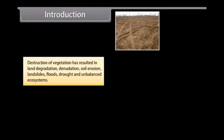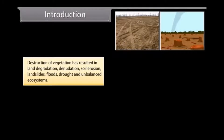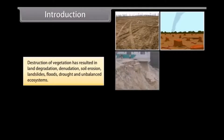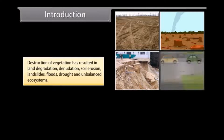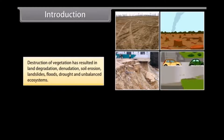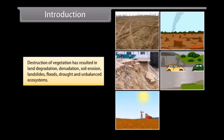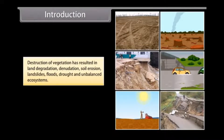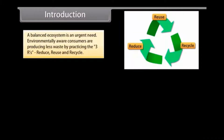Over-exploitation of natural resources by a growing population resulted in various severe problems. Destruction of vegetation has resulted in land degradation, denudation, soil erosion, landslides, floods, drought, and unbalanced ecosystems. A balanced ecosystem is an urgent need.